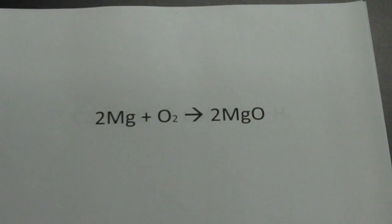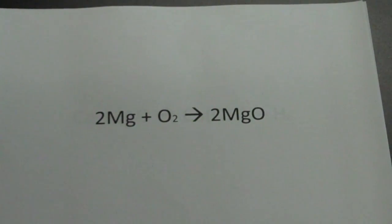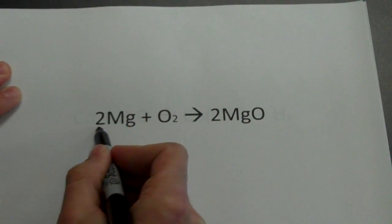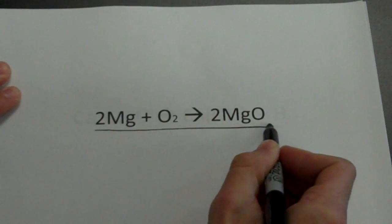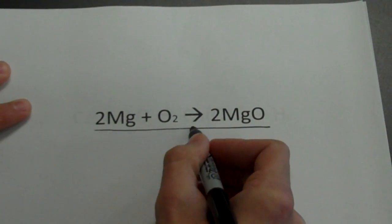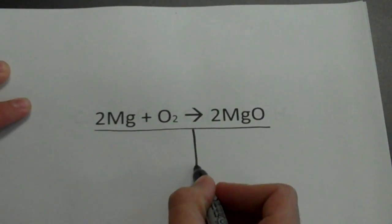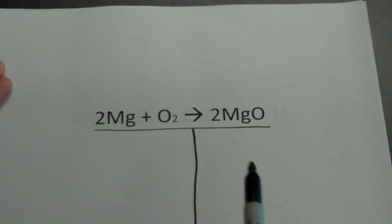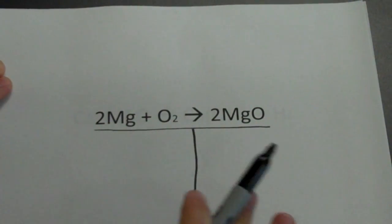We're going to practice determining whether an equation is balanced or unbalanced. When we're doing this, let's do the first step and go ahead and underline the whole thing. Then where you find the yield sign, let's draw a vertical line going down. The reason we do this is just so it's nice and neat and easy to look at.